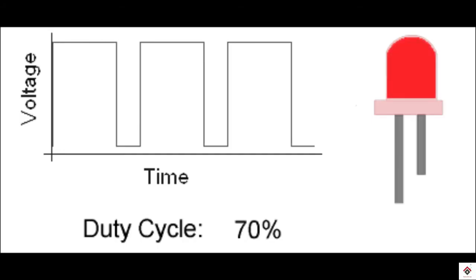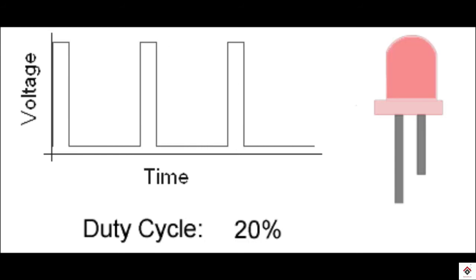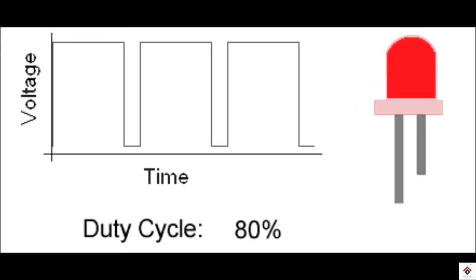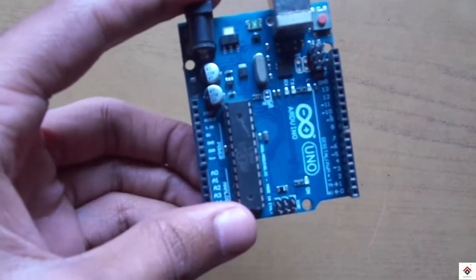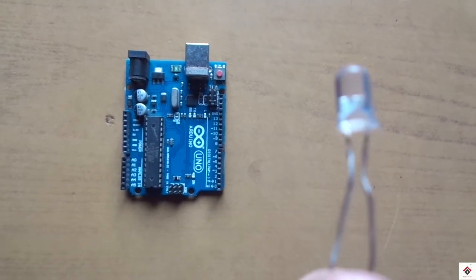Finally from this video you can clearly understand how the duty cycle and voltage varies. As the duty cycle increases the voltage also increases at the output. Before moving on to the code, the components you need for this video are an Arduino Uno board and an LED.